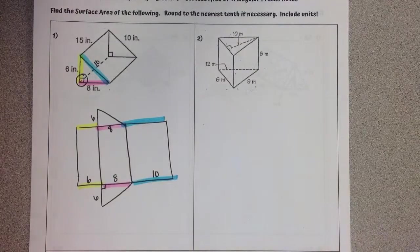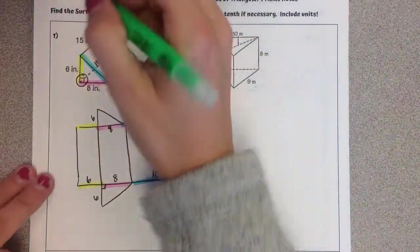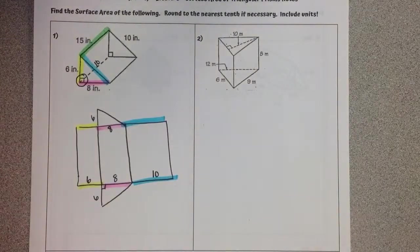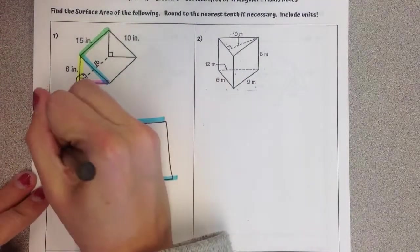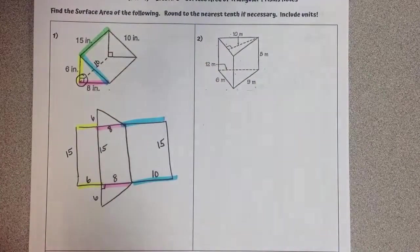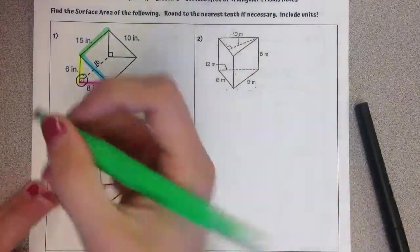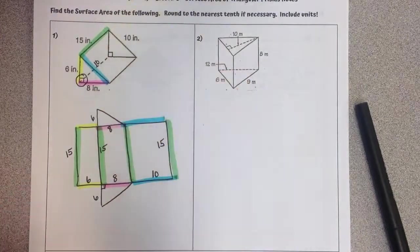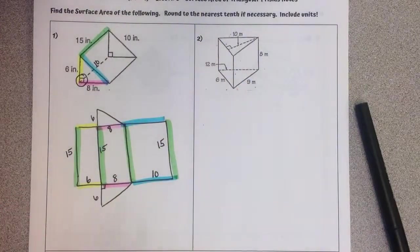And then the last part is identifying the height or depth of the prism, which is the length connecting the two triangles to each other. In this case, it is 15. So now we've got all of the measures on our triangular prism. We can find the surface area.